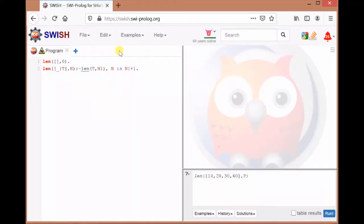To test the program, we're using an online platform. Here we've written the program, and here we've written the query for the length of this list. We'll get the result in P. When we run this, we will get P = 4.